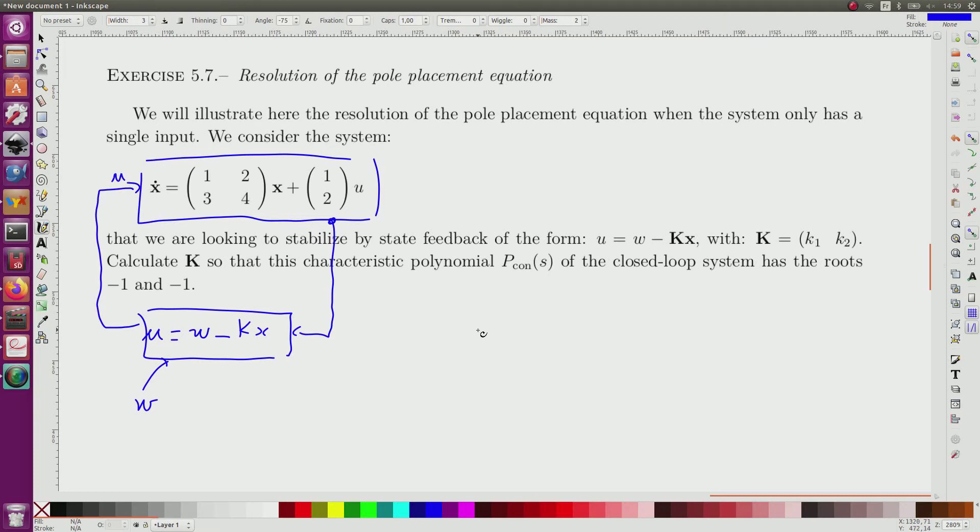Recall that the state equation is X dot equal, so this is the matrix A, so AX plus BU, so this is B, and U is equal to W minus Kx. So I have A minus BK, X plus Bw.